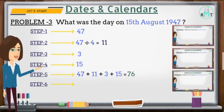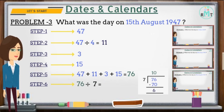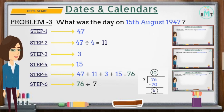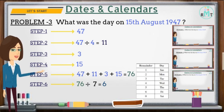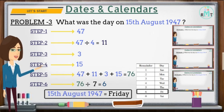Step 6: Divide 76 by 7. We get quotient equal to 10 and remainder equal to 6. We deal with the remainder only, so we write 6 as the answer. From the day key, remainder 6 corresponds to Friday. Hence, 15th August 1947 was a Friday.